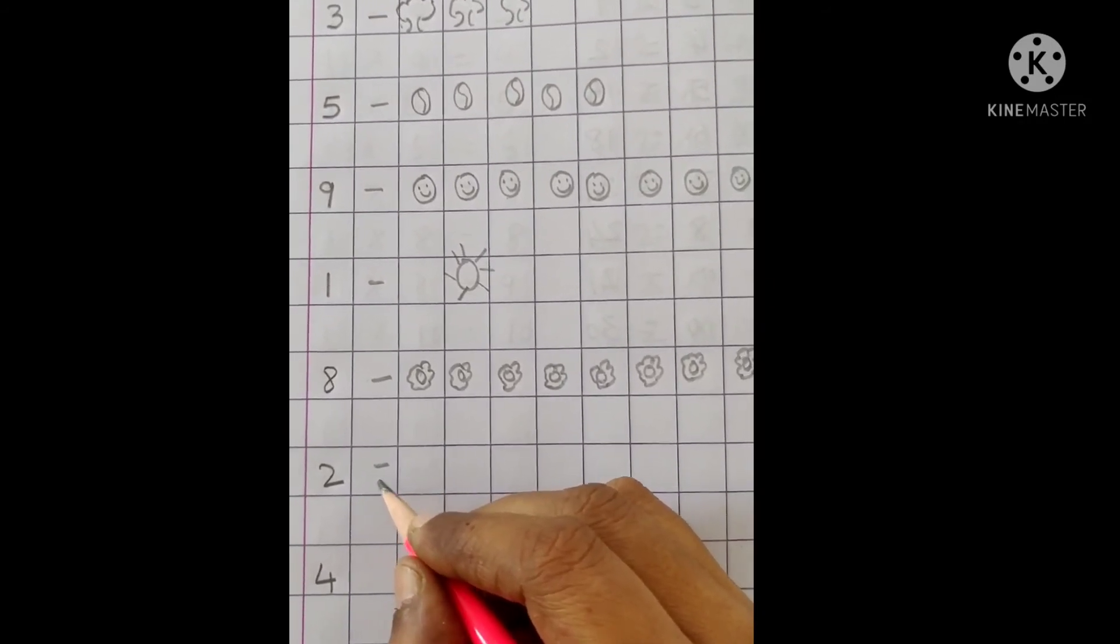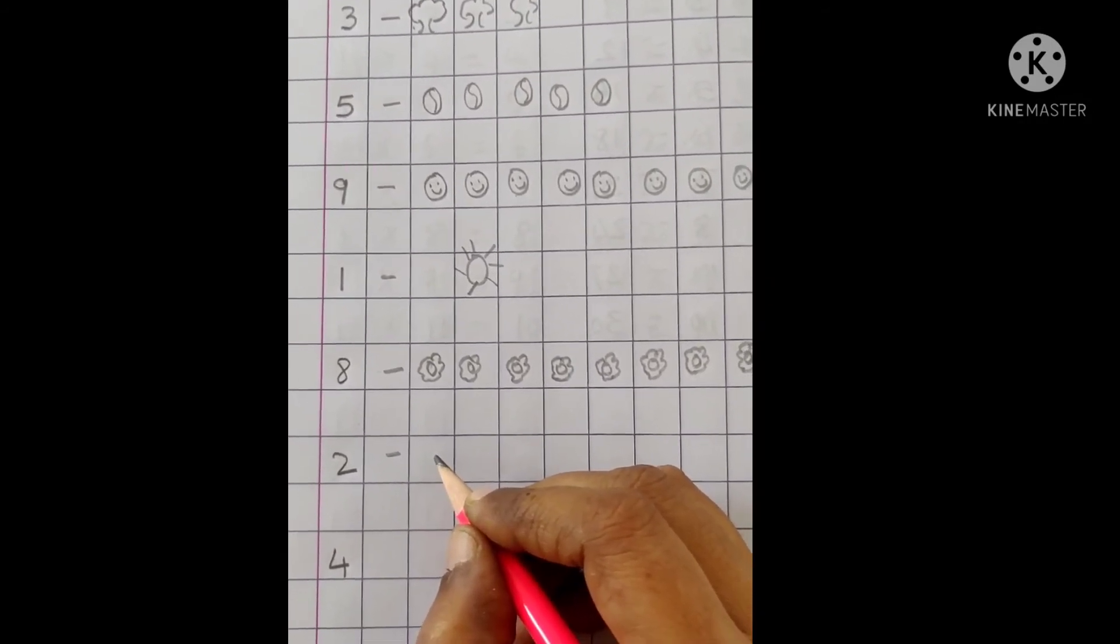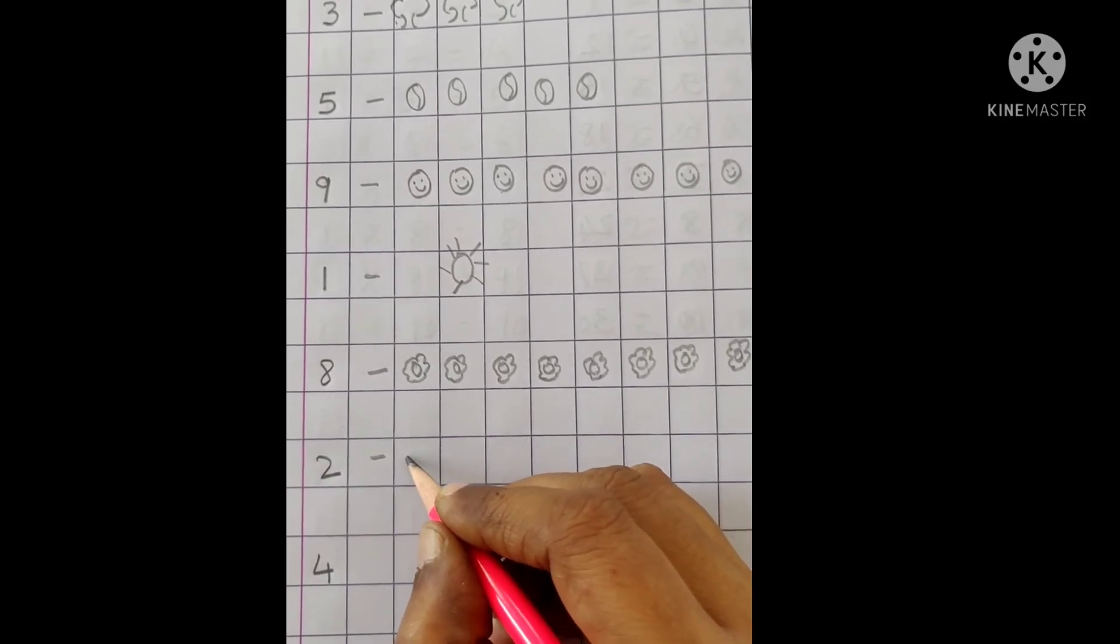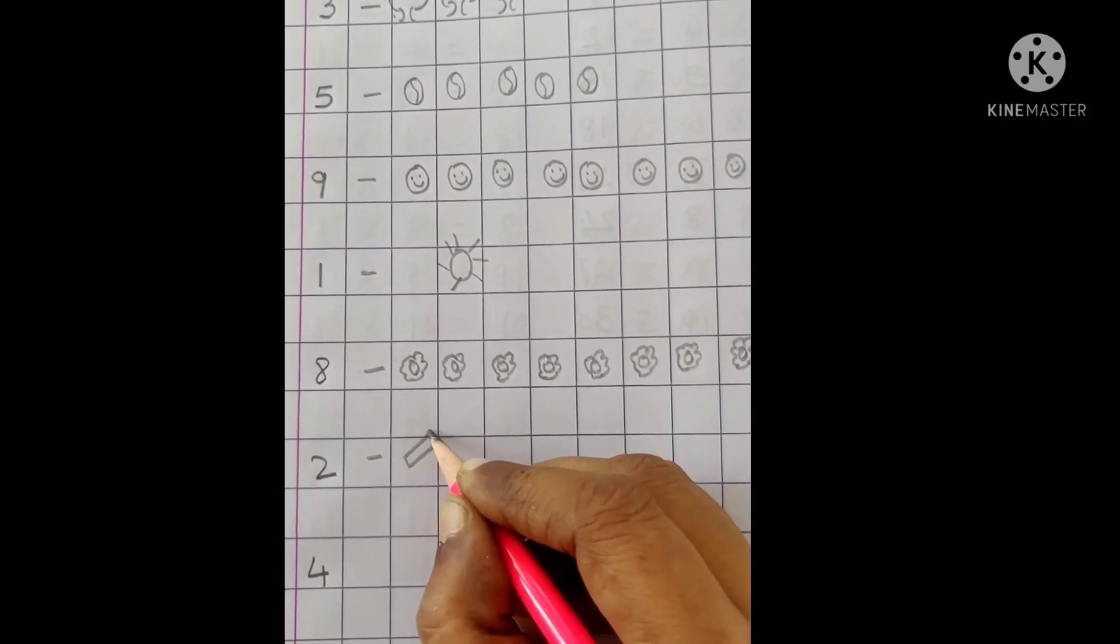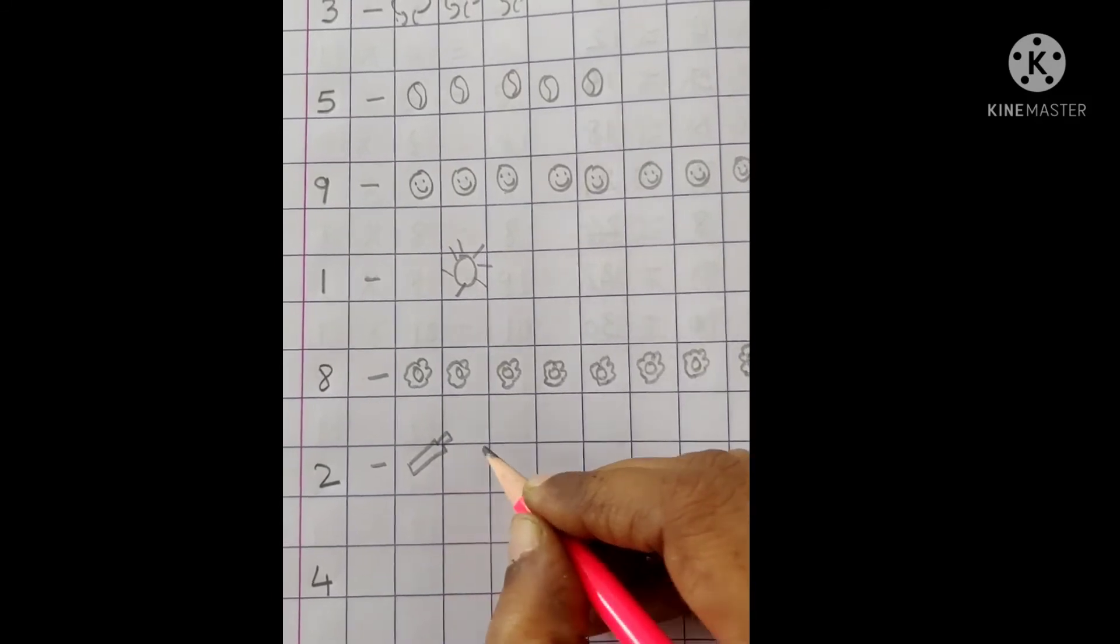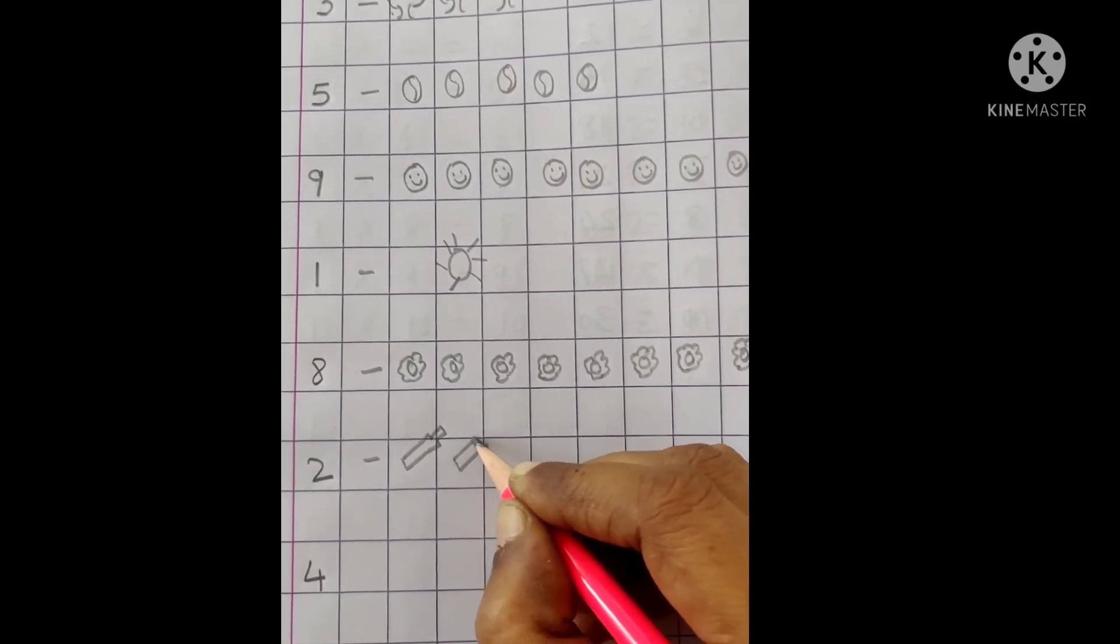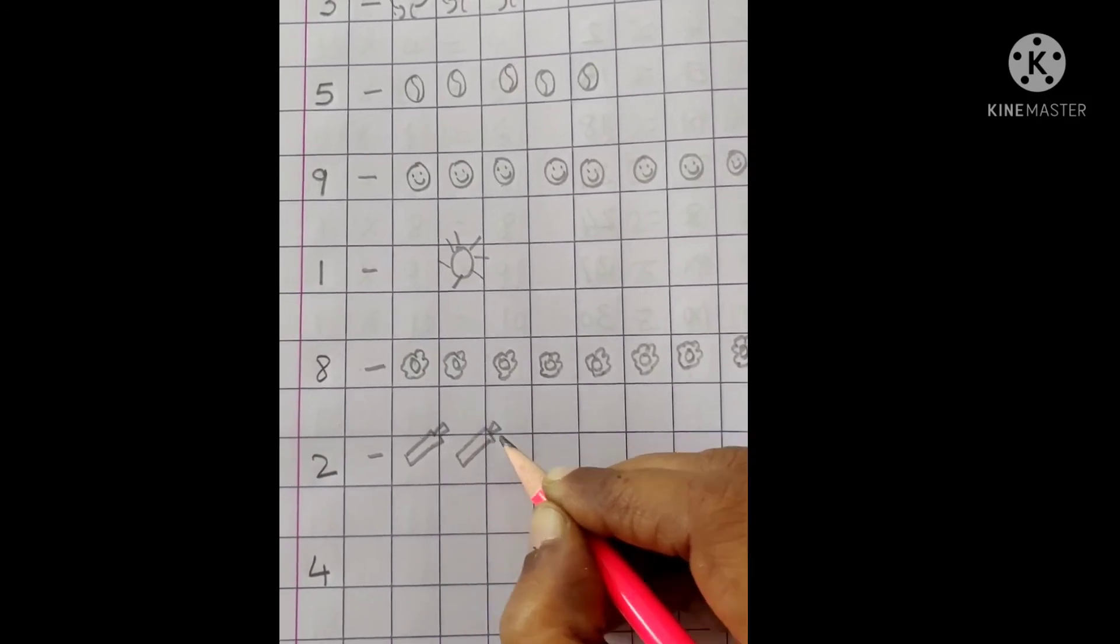Next is number 2. What will we draw? 2 bat. 1, 2, 2.